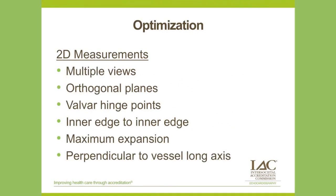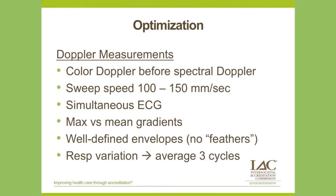Measurements should involve multiple views and orthogonal planes, especially for non-circular structures like the atrioventricular valves. Valve measurements should be performed at the valvar hinge points from inner edge to inner edge at the point of maximum expansion. Vascular structure measurements should be performed from inner edge to inner edge at maximum expansion, perpendicular to the axis of blood flow. For Doppler optimization, use color mapping before spectral Doppler to determine flow direction, a sweep speed of 100 to 150 millimeters per second with simultaneous ECG tracing, and average measurements over at least three cardiac cycles to account for respiratory changes.